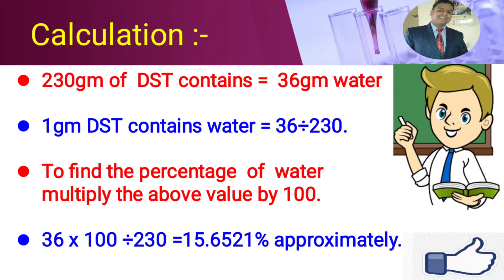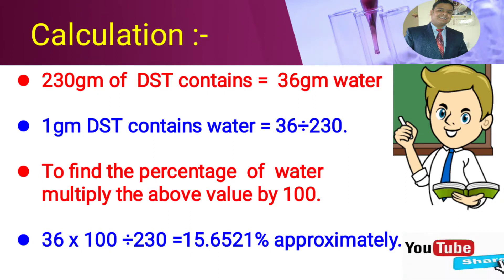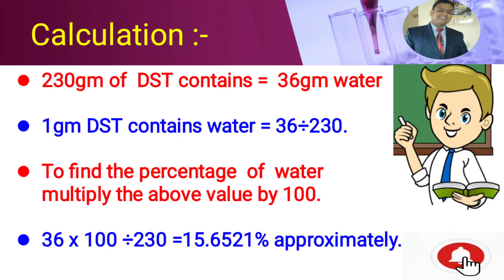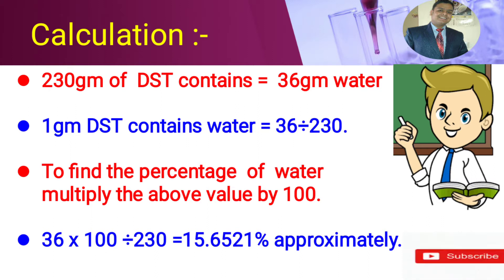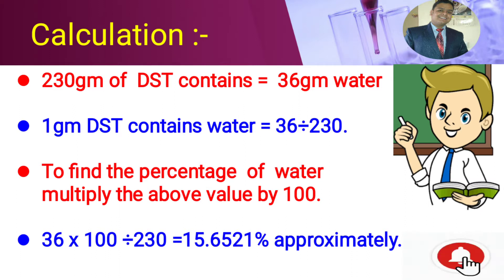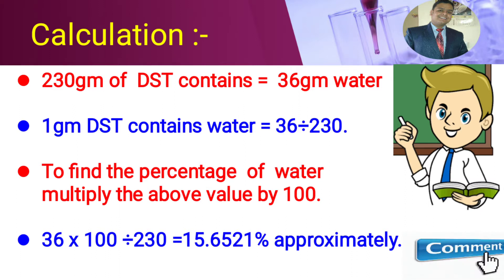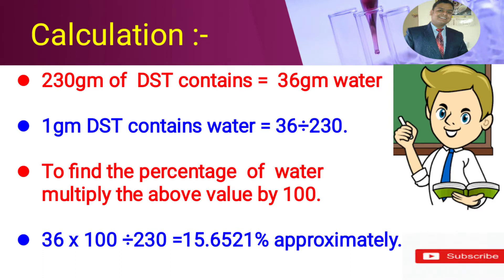Calculation: 230 g of DST contains 36 g of water. So 1 g of DST contains 36 divided by 230. To convert it to percentage form, the above value is multiplied by 100, giving us 15.6521%, or we can say 15.66% of water is present in the DST.